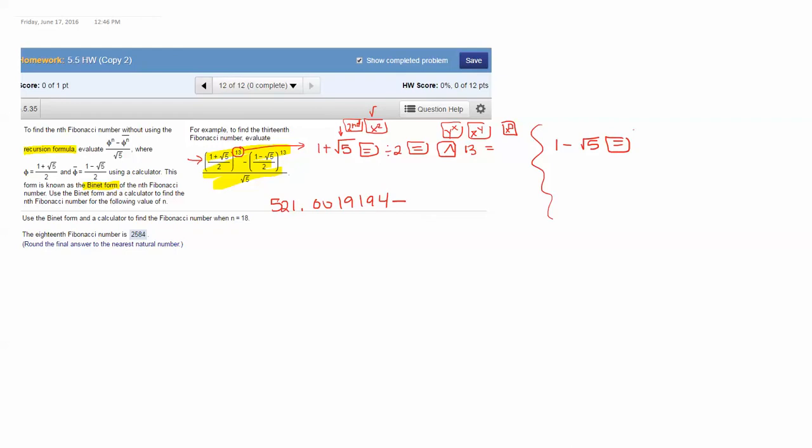1 minus the square root of 5 equals. Your calculator right now should say negative 1.236067977. Leave that number there and now you're going to divide by 2 and press equals again. So divide by 2 equals.